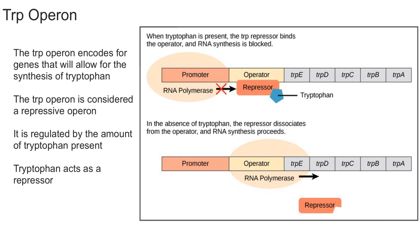The trp operon is considered a repressible operon, which means that in general transcription is on until the repressor binds to turn it off. Normally the repressor is not bound, and this allows RNA polymerase to transcribe the genes needed to create tryptophan. When tryptophan binds to the repressor, the repressor then binds to the operator sequence, and this prevents the RNA polymerase from making mRNA.